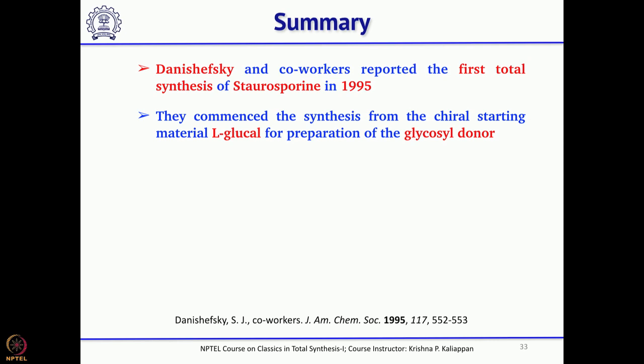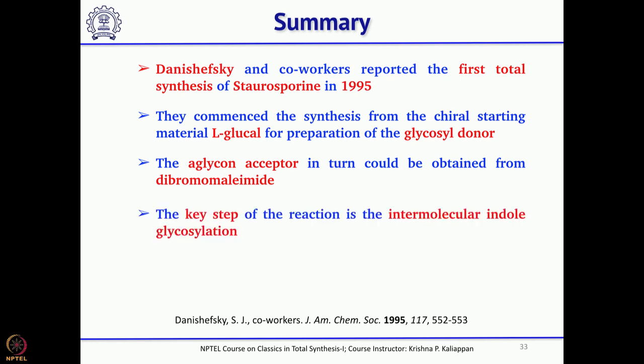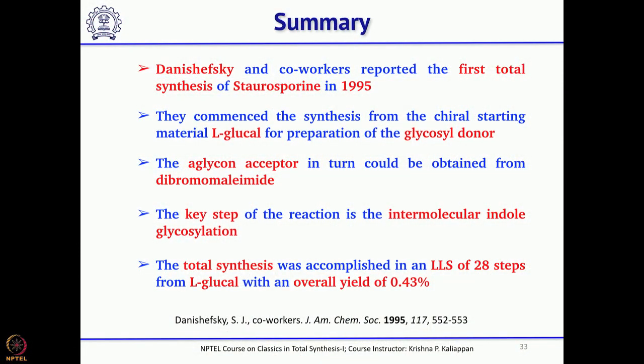This is how Danishefsky completed the total synthesis of staurosporine. He started with L-glucal for the glucoside fragment and dibromo N-protected maleimide for the top fragment, attached the two indole units through 1,4-addition/elimination, then used electrocyclic ring closure followed by aromatization to construct the central aromatic ring. Overall he took about 28 steps starting from L-glucal with a yield close to 0.5 percent, which was nonetheless a very good total synthesis of a quite complex alkaloid.